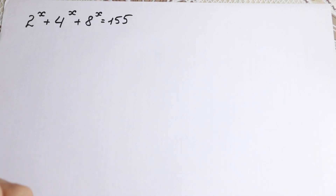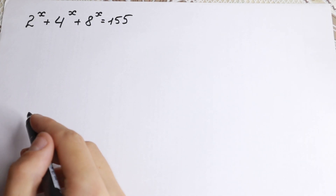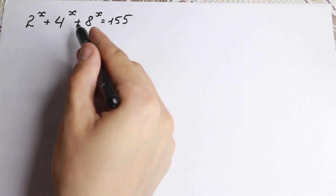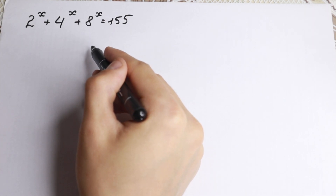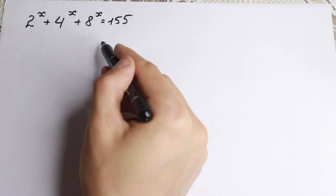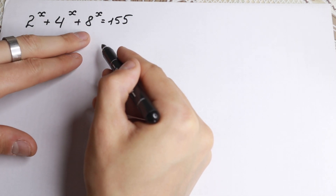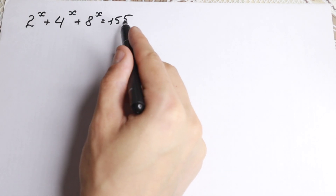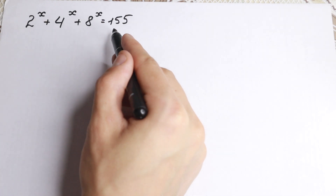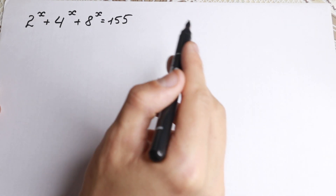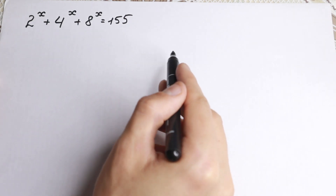Hello, welcome back to my channel. Today we have a really interesting problem: 2 to the x plus 4 to the x plus 8 to the x equals 155. On the first look this problem is really hard because we have all different bases and three exponents, and the constant 155 is an odd number so we cannot factor it in the usual way. But I want to show you a really good trick.